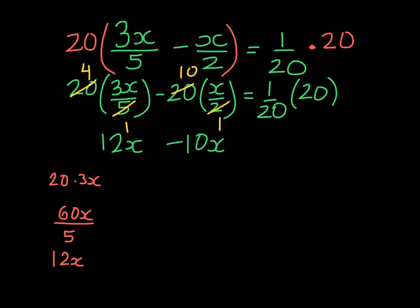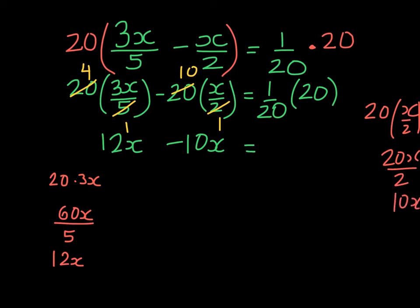If you want to do that slowly, you could multiply 20 times x, and in the denominator you would have 2. That would reduce to 10x. And 20 goes into 20 once, and also into 20 once — we get 1.